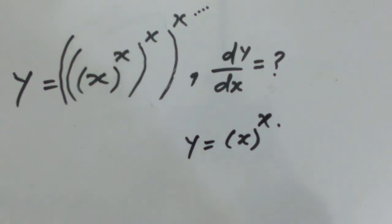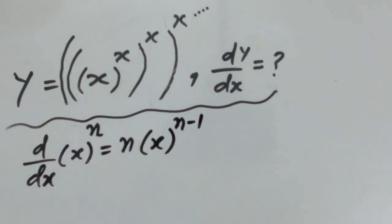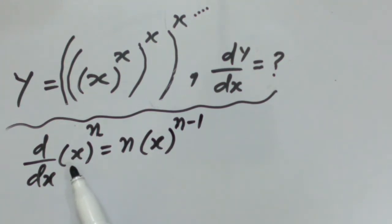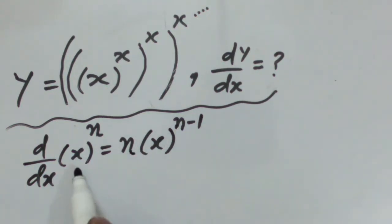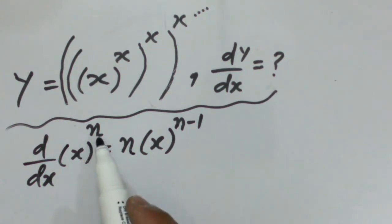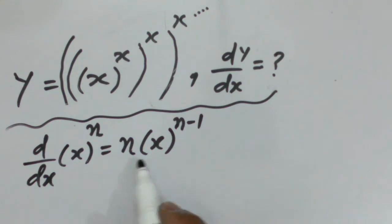Let me explain the formulas for the calculation of this type of function. One formula is called the power rule: when the function is in the form of x^n, we adopt the power rule, where x is the variable and n is the constant. The derivative of this type of function is equal to n·x^(n-1).